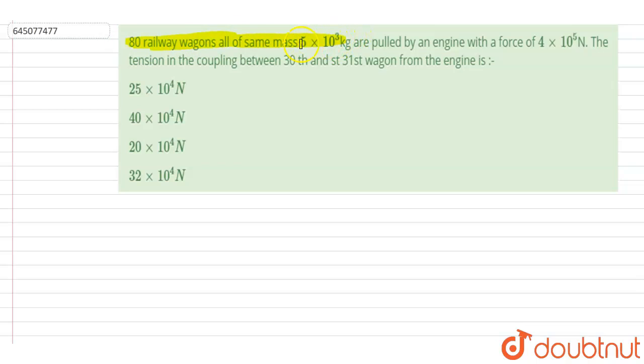5 × 10³ kg are pulled by an engine with a force of 4 × 10⁵ Newton. The tension in the coupling between the 30th and 31st wagon from the engine is...